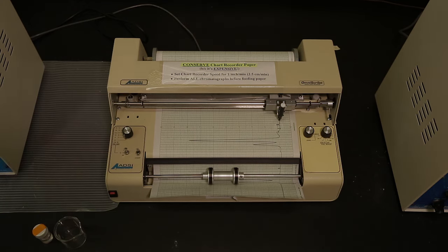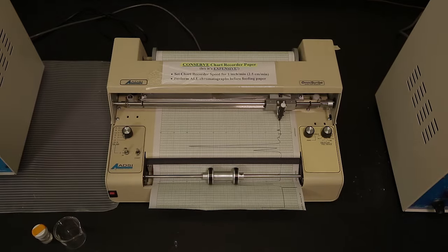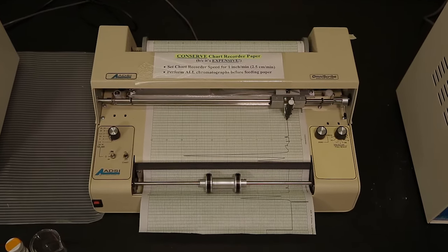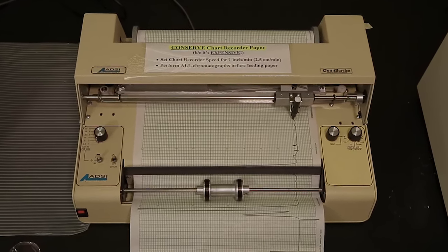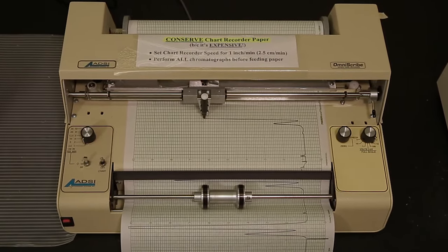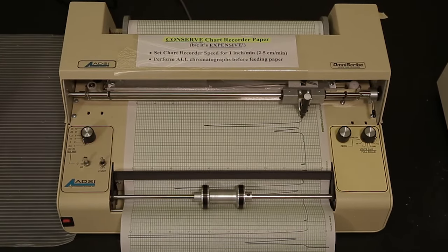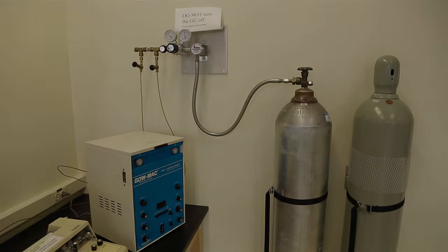This technique allows us to separate volatile organic compounds based on their physical properties and determine relative amounts of product yields. Coupled with a computer library, GC can also be used to identify organic compounds.